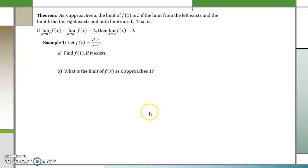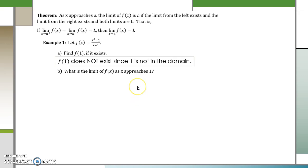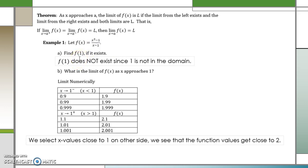Our first example: given the function f(x) = (x² - 1)/(x - 1), find f(1) if it exists, and find the limit of f(x) as x approaches 1. We know that f(1) does not exist because plugging 1 into the denominator gives 0, so x is not in the domain. Now let's numerically look at the limit as x approaches 1. Plugging in values from the left — numbers less than 1 — we get 1.9, 1.99, 1.999, so we're getting close to 2.